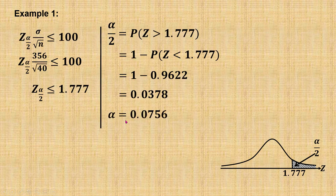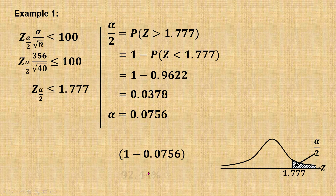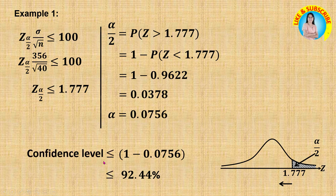And alpha is 0.0378 times 2, which is 0.0756. Then the confidence level is 1 minus alpha, expressed as a percentage, which is 92.44%. Since z alpha over 2 is less than or equal to 1.777, therefore the confidence level is also less than or equal to 92.44%.